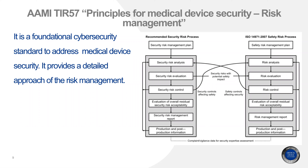One example is networked infusion pumps delivering fluids or medications — such as insulin, chemo drugs, or hormones — in a controlled manner. For safety, the pump receives regular software updates and the drug library gets updated with default dosage information. Imagine an attacker gaining access to the library — this leads to a change in dosage information and delivery of inaccurate doses to patients. If it's insulin being delivered, the patient may suffer from hypoglycemia, hyperglycemia, or diabetic ketoacidosis. This is how a security risk becomes a safety risk.